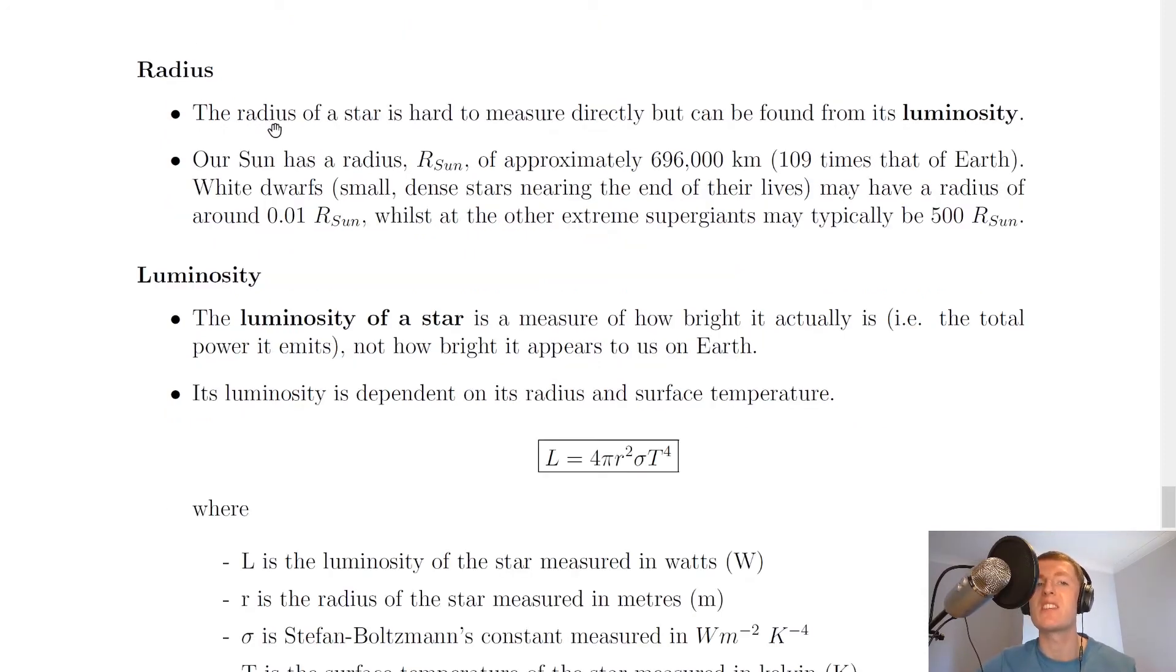Moving on, we have the radius. The radius of a star is hard to measure directly but can be found from its luminosity, which we'll see next. Our sun has a radius of approximately 696,000 kilometers, about 109 times that of the earth. White dwarfs, which are small dense stars nearing the end of their lives, again we'll see that later, may have a radius of around 0.01 times the radius of the sun. Whilst at the other extreme, supergiants may typically be about 500 times the radius of the sun.